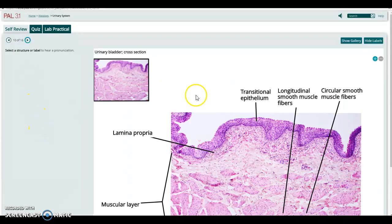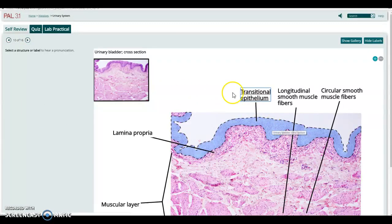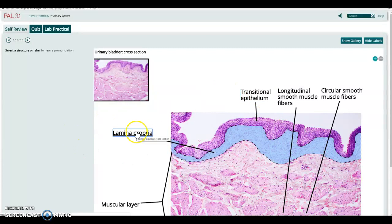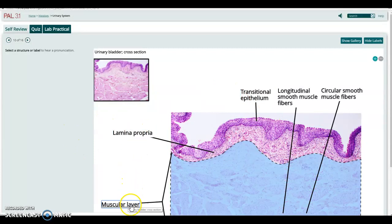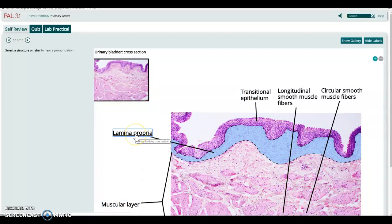Now we're into the bladder where you can see that nice transitional epithelium on the inner surface of the bladder. So please do be aware of that, the muscular layer under it, and of course, that intermediate lamina propria or the submucosa where you've got all the blood vessels and nerves going through.